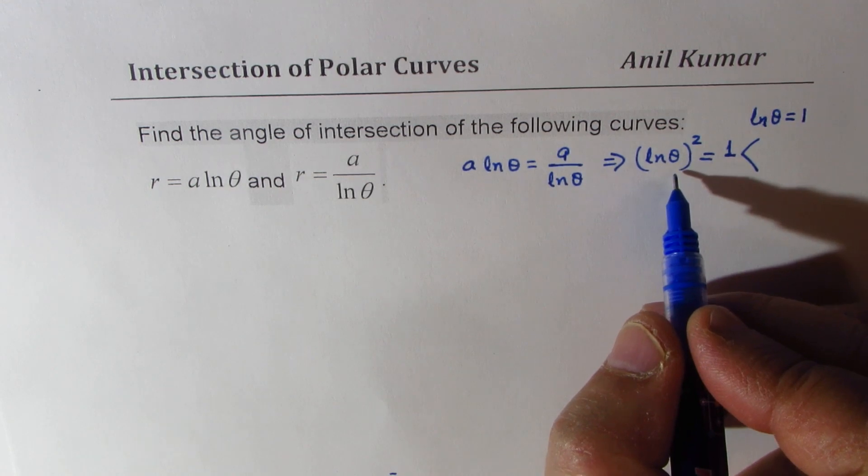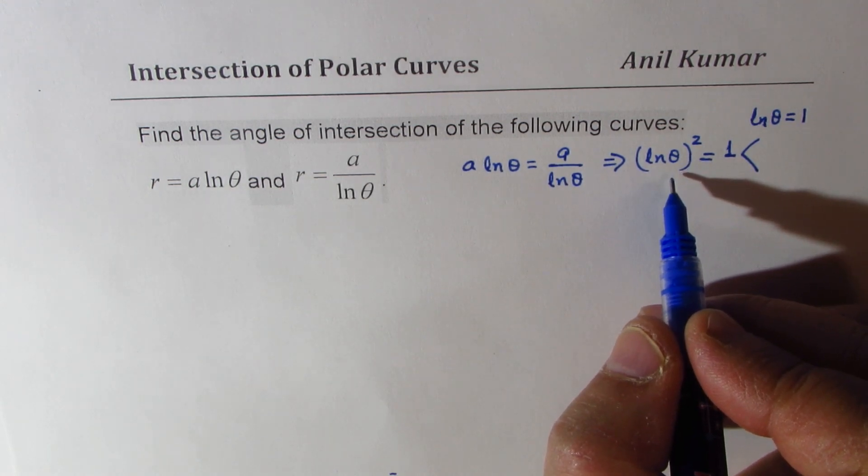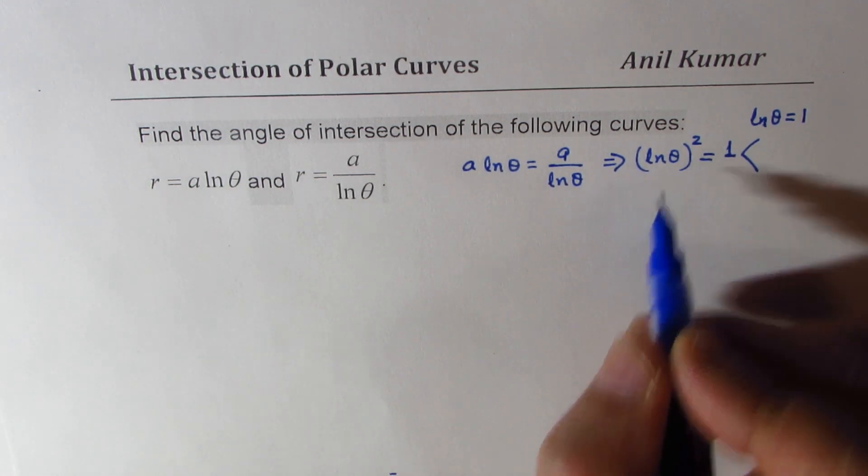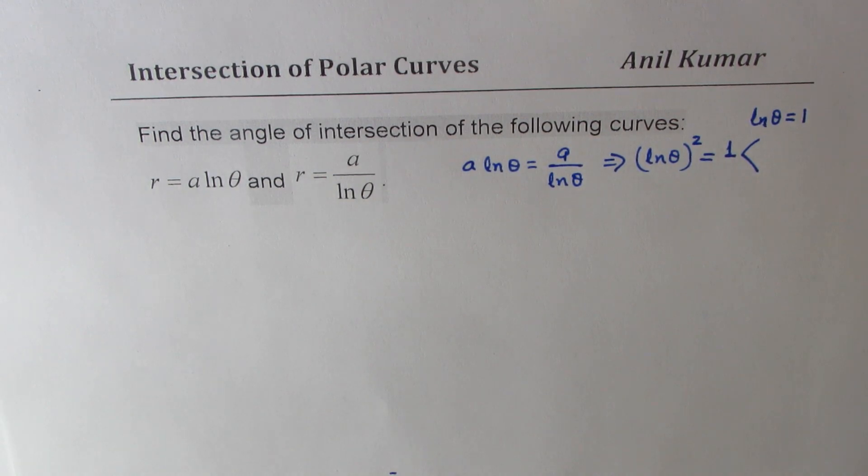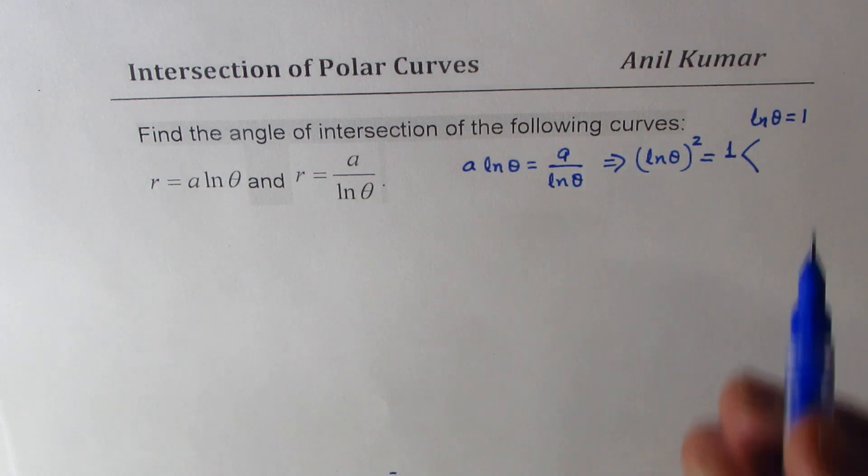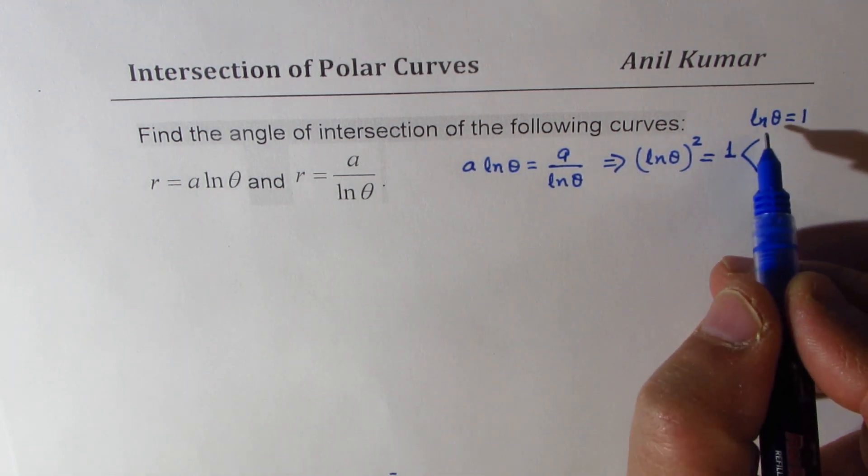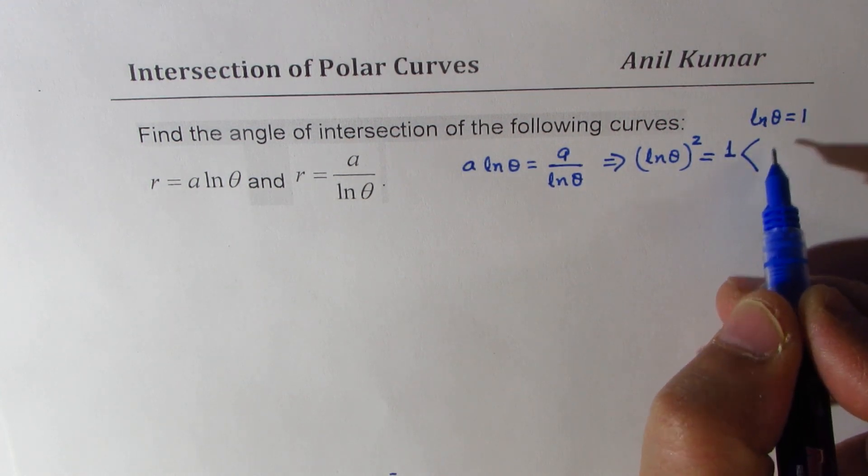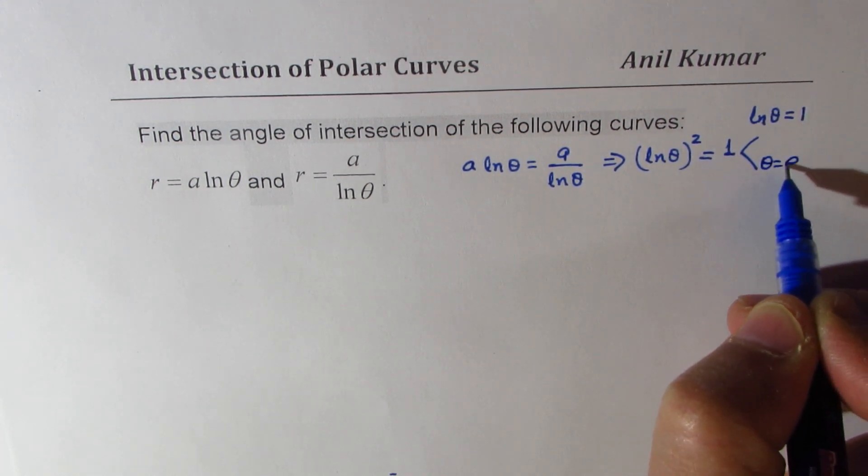Second, which also is that we are also looking as theta as, when ln theta is 1, then theta is what? So if ln theta is 1, that means theta equals to e, right?